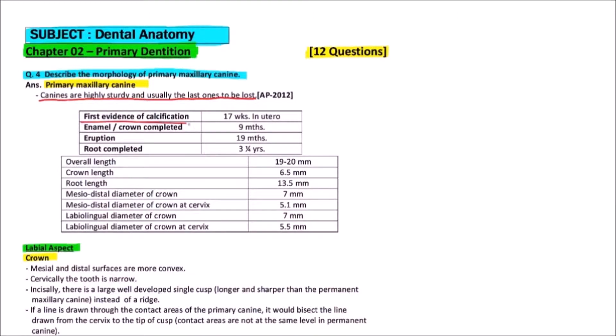First evidence of calcification of primary maxillary canine appears at 17 weeks in utero. The enamel or crown is completed by 9 months of age.